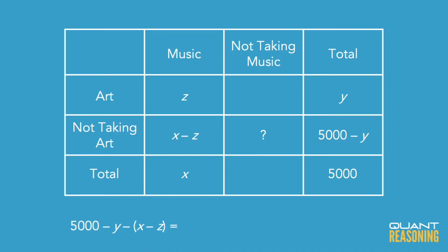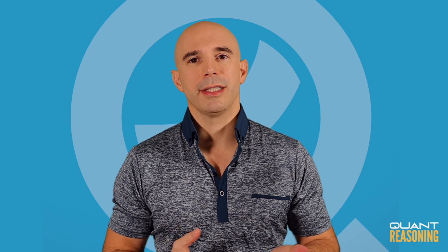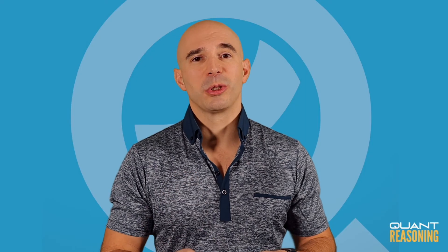We're looking for those students who take neither art nor music. So the answer would be 5,000 minus y minus (x minus z). Remember, a minus minus turns into a plus. So we end up with 5,000 minus x minus y plus z. And that's answer choice E.